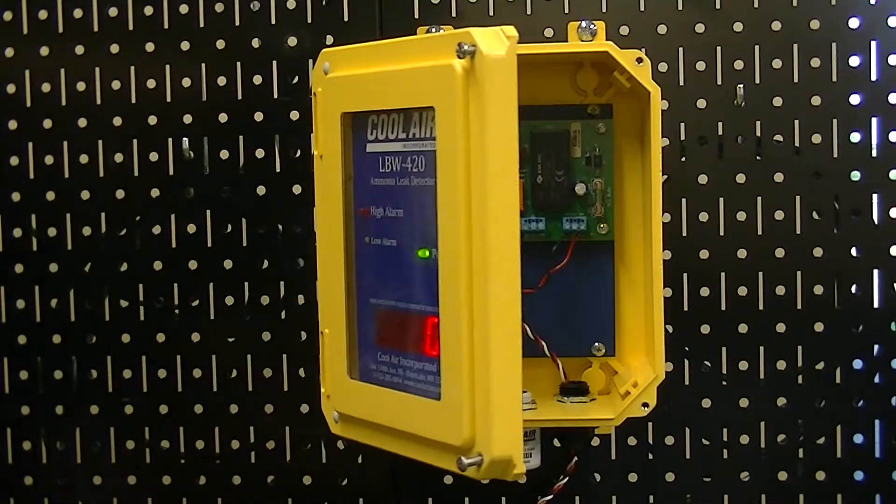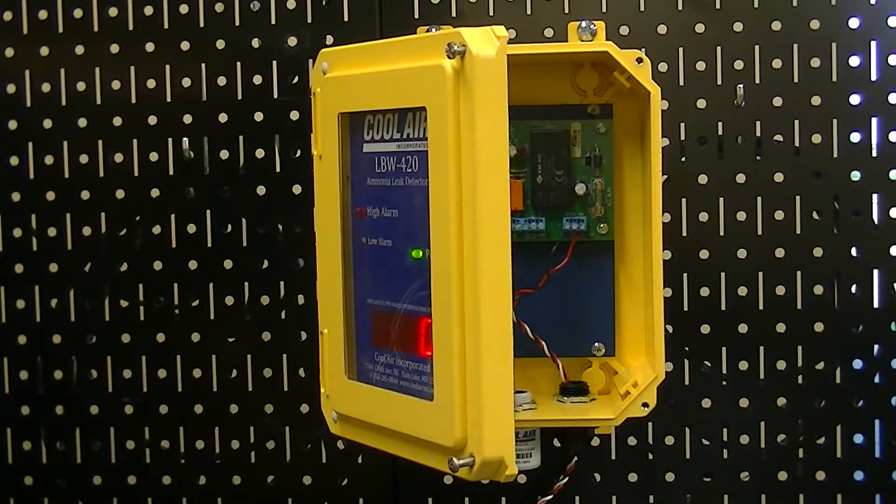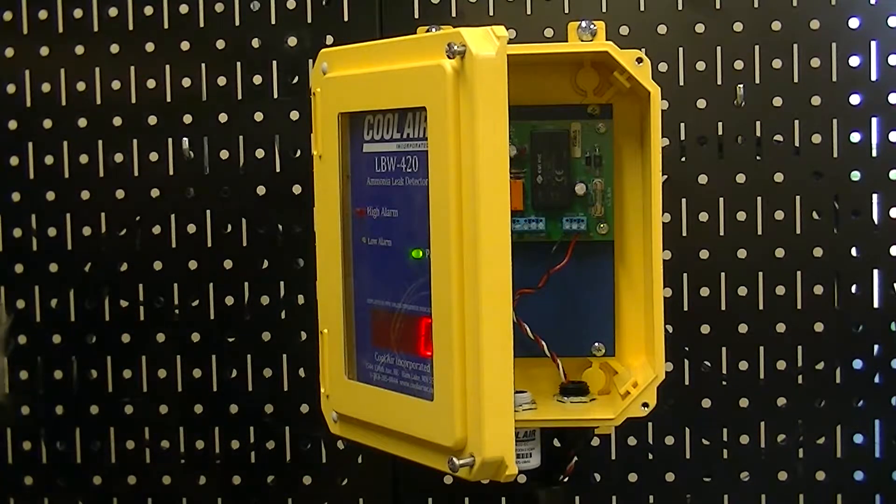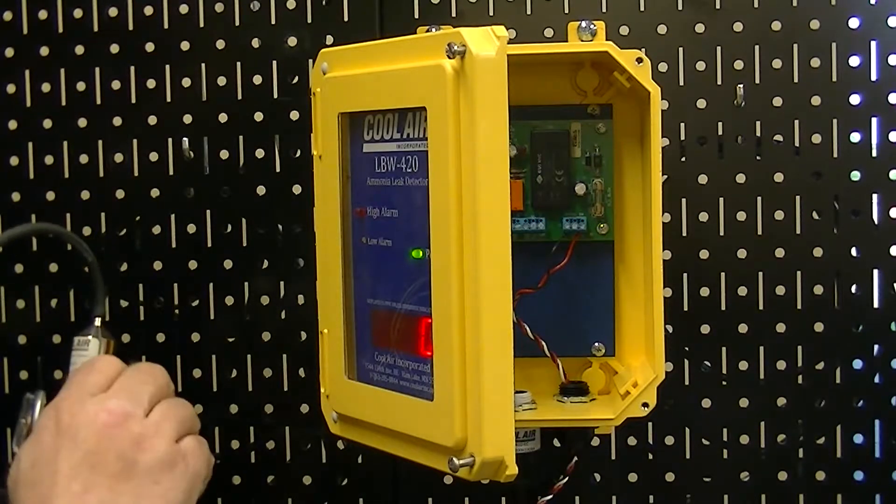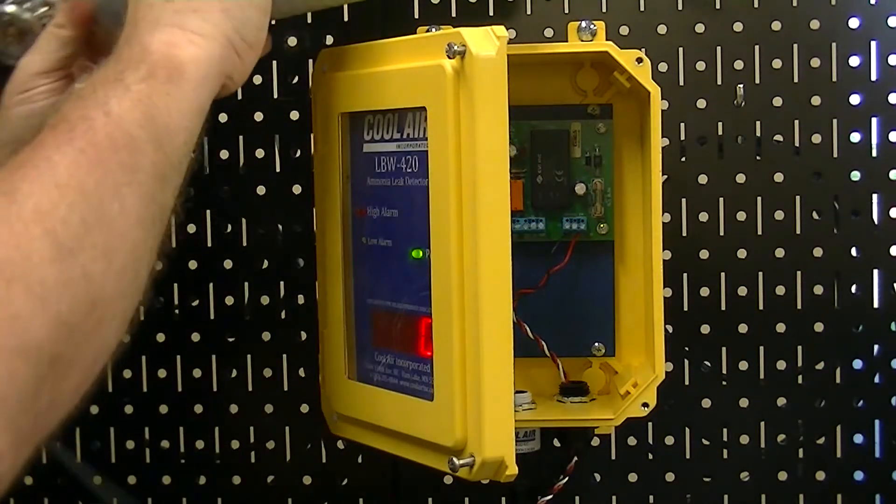We're going to apply our test gas to whatever value you want to calibrate to. I'm calibrating to 100 ppm. I'm going to connect the connector to the sensor, turn the test gas on at a flow rate of 0.3 liters per minute.